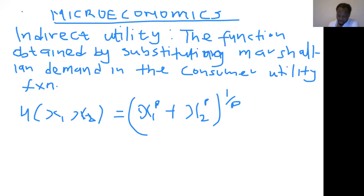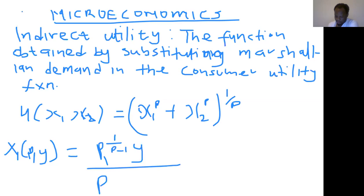From the previous session, we had x1 as a function of p and y to be: x1(p,y) = P1^(1/(φ-1)) · y / [P1^(φ/(φ-1)) + P2^(φ/(φ-1))]. And we had x2 as a function of p and y to be: x2(p,y) = P2^(1/(φ-1)) · y / [P1^(φ/(φ-1)) + P2^(φ/(φ-1))].